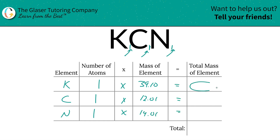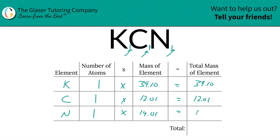Now to find the total mass of the element in the compound, we're going to simply multiply across the row. So that's 39.10 total mass for potassium, carbon is 12.01, nitrogen is 14.01. And then we're simply going to add up the entire column here, which gives us 65.12.